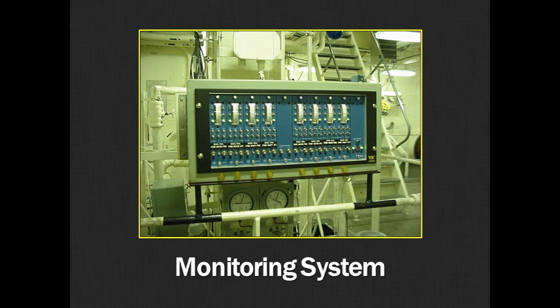Here's a monitoring system that happens to be aboard ship. This is actually monitoring eight different bearings and in each one of these modules it is actually hooked up to two eddy current proximity probes. These probes are referred to as X and Y probes because they're measuring in two directions.